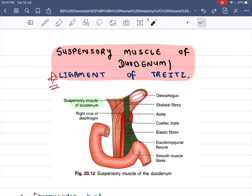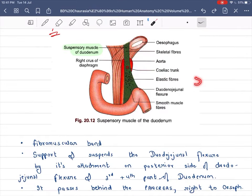Then we will see this is the crus of diaphragm which arises from aorta, celiac trunk. Elastic fibers will be our middle part, striped fibers will be our first part, and duodenojejunal flexure will be attached to the posterior part of the 3rd and 4th part.